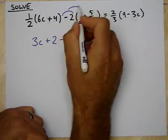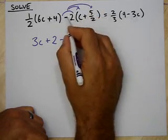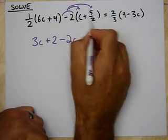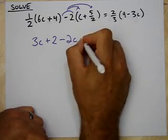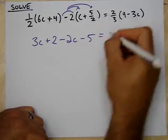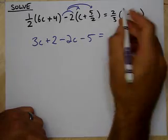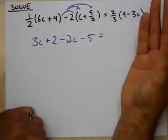I get negative 2c and negative 2 times 5 halves. The 2's cancel out, right? I get negative 5 equals 2 thirds of 9 is 6 or I can do 2 times 9 is 18 divided by 3 is 6.